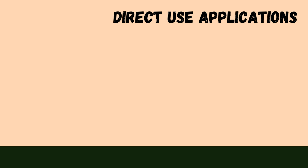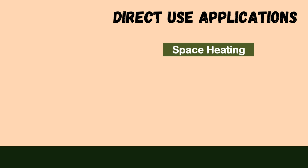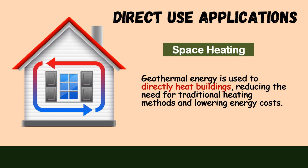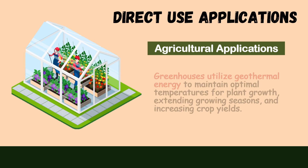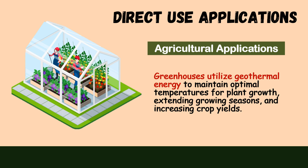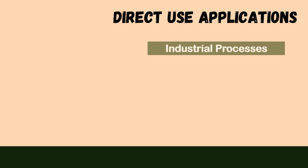Direct applications of geothermal energy encompass a range of purposes. In space heating, geothermal energy is used to directly heat buildings, reducing the need for traditional heating methods and lowering energy costs. In agricultural applications, greenhouses utilize geothermal energy to maintain optimal temperatures for plant growth, extending growing seasons and increasing crop yields.